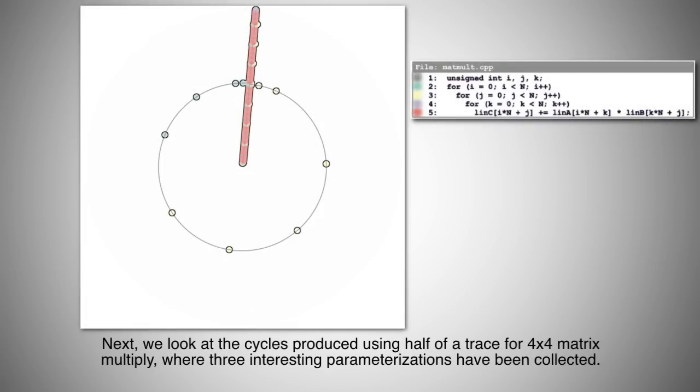Next, we look at the cycles produced using half of a trace for a 4x4 matrix multiply, where three interesting parameterizations have been collected.